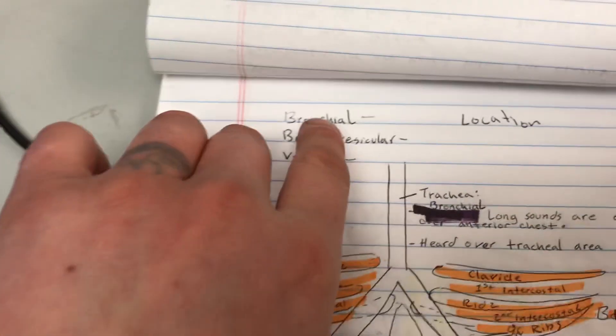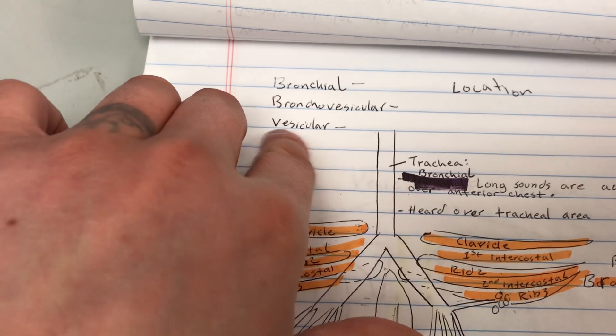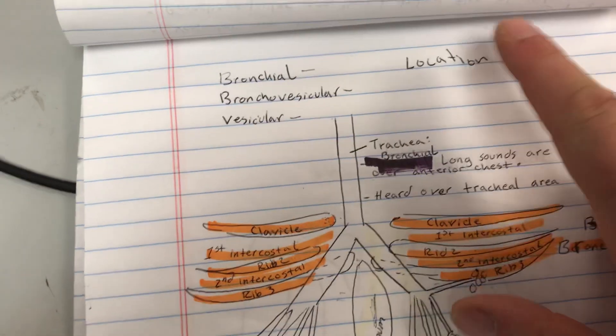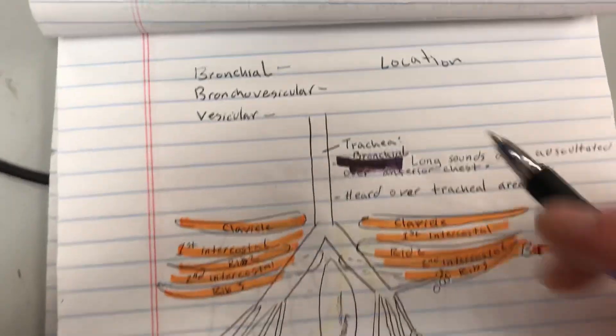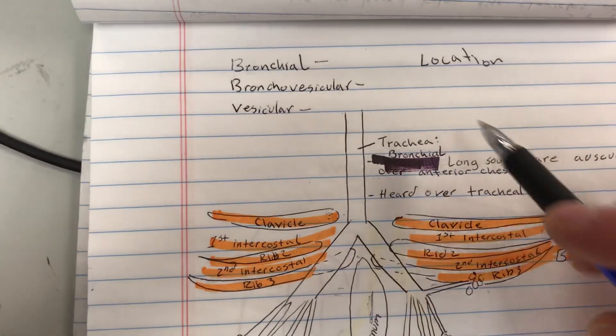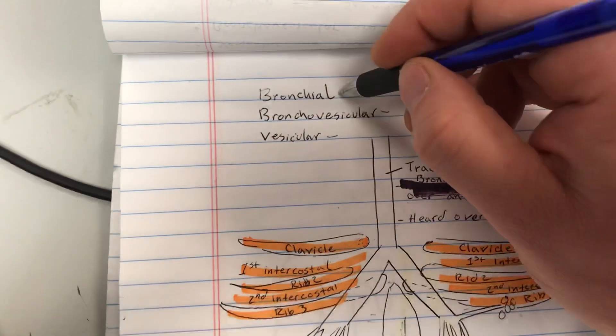In this video I'm going to go over bronchial, bronchovesicular, and vesicular lung sounds, and I'm only talking about the location. I'm not going to talk about how they sound. If you want to hear how they sound, there are some great videos on YouTube already that can give you an idea of what you should listen for.